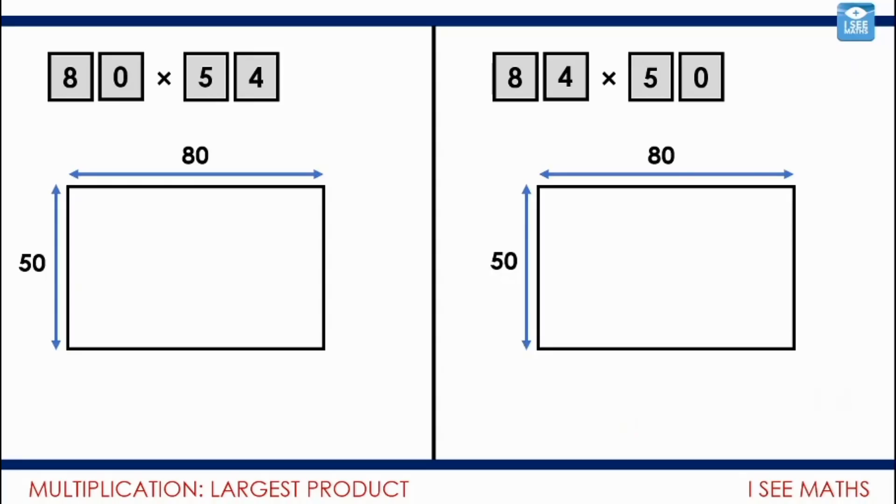Let's have a look at how those images change. 80 multiplied by 54. Well, it will be another 4 there. So, I'll have another 4 lots of 80. And the image on the right, well, I'll have 80 will become 84. So, I'll have another 4 lots of 50. So, which one's more? Well, when we have 4 more lots of 80, that's more than having 4 more lots of 50. So, 80 multiplied by 54 will be more than 84 multiplied by 50. Now, just notice this pair of numbers are closer together and this pair of numbers are slightly further apart.